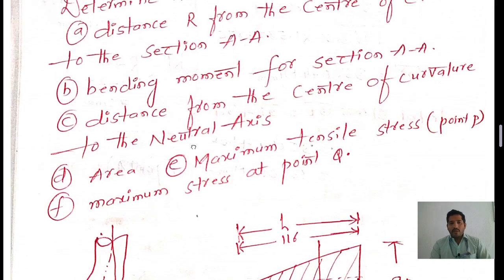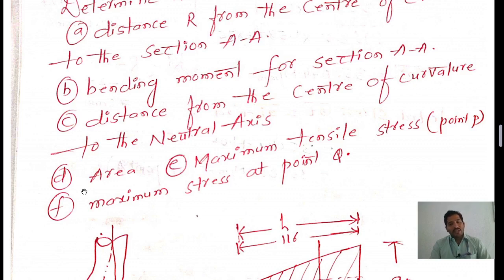We need to determine: the bending moment for section A-A, the distance from the center of curvature to the neutral axis, the area of the section, and the maximum tensile stress acting at point P as well as the maximum stress acting at point P.